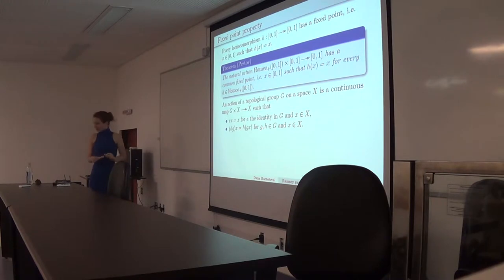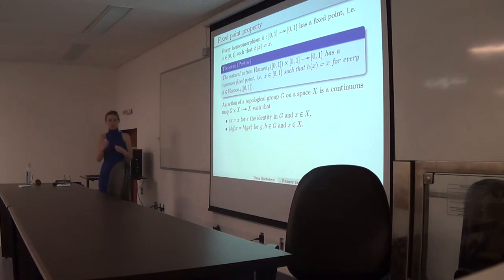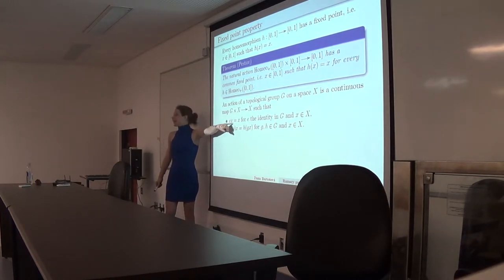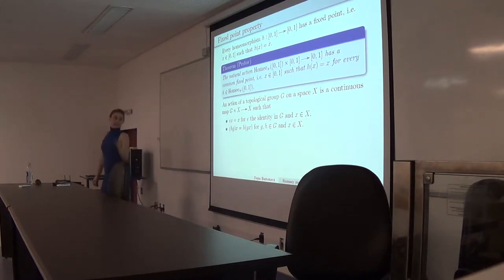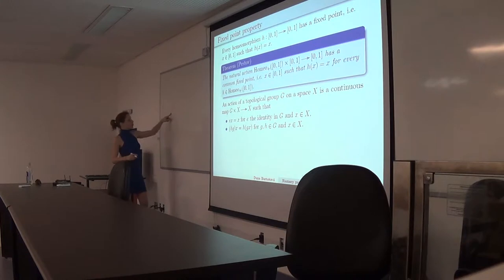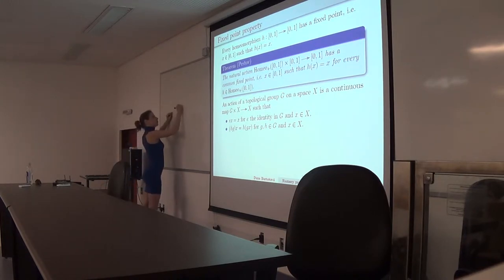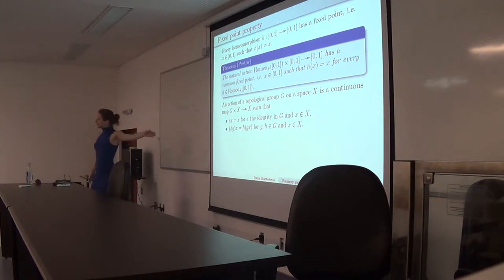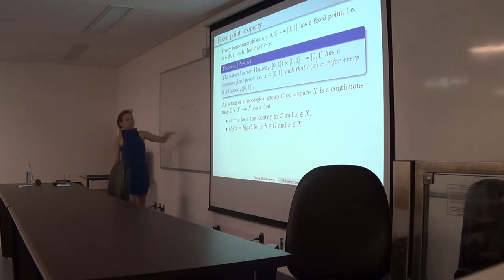Just to make sure we know the definition: an action is a continuous map from the product of a topological group with a compact Hausdorff space into the space, such that the identity on the group acts as an identity. I will use the multiplication notation instead of saying this is a map π acting on G and X. If you multiply two elements of the group, this is like composition.